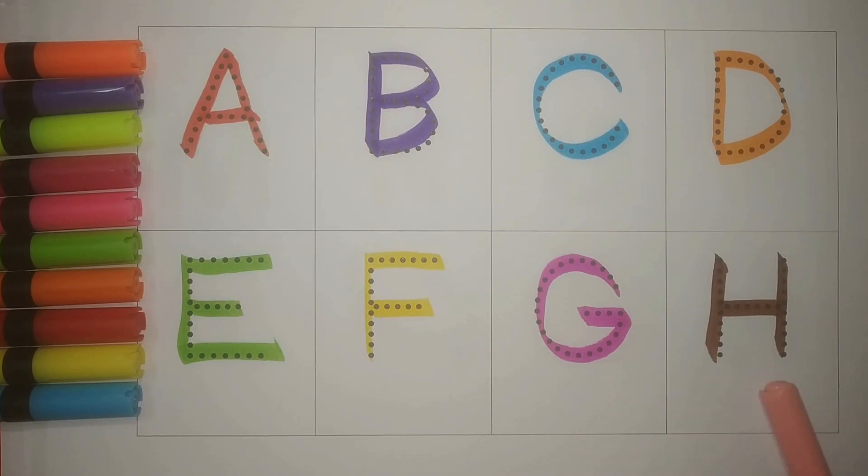G, pink, G for goat. And H, brown, E for horse, simple.